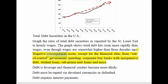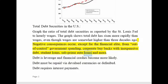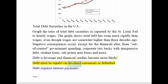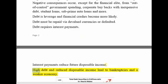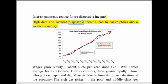Negative consequences occur — except for the financial elite — from out-of-control government spending, corporate buybacks with inexpensive debt, student loans, subprime auto loans, and more. Debt is leverage and financial crashes become more likely. Debt must be repaid via devalued currencies or defaulted. Debt requires interest payments, which reduce future disposable income. High debt and reduced disposable income lead to bankruptcies and a weaker economy.